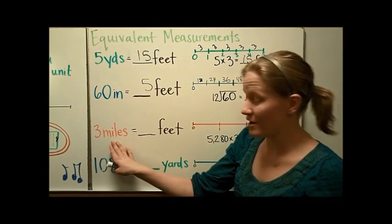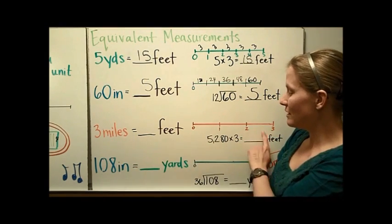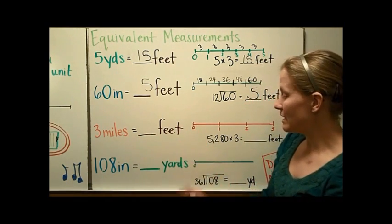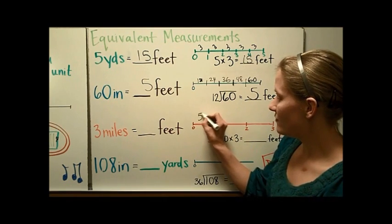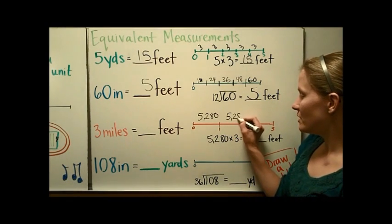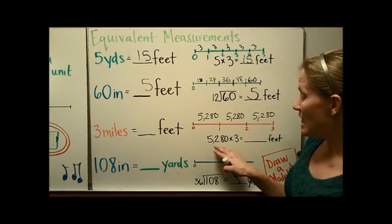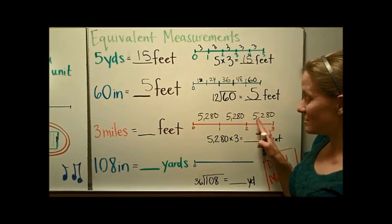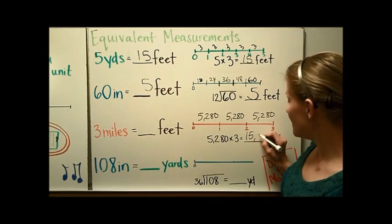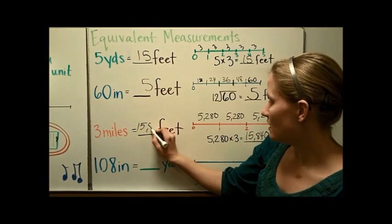If I needed to know exactly how many feet were in 3 miles, I would draw a line divided into 3 sections and write how feet and miles are related. In each mile there are 5,280 feet, so each of the 3 sections has 5,280. I could add them or multiply by 3 — either way, the answer is 15,840 feet in 3 miles.